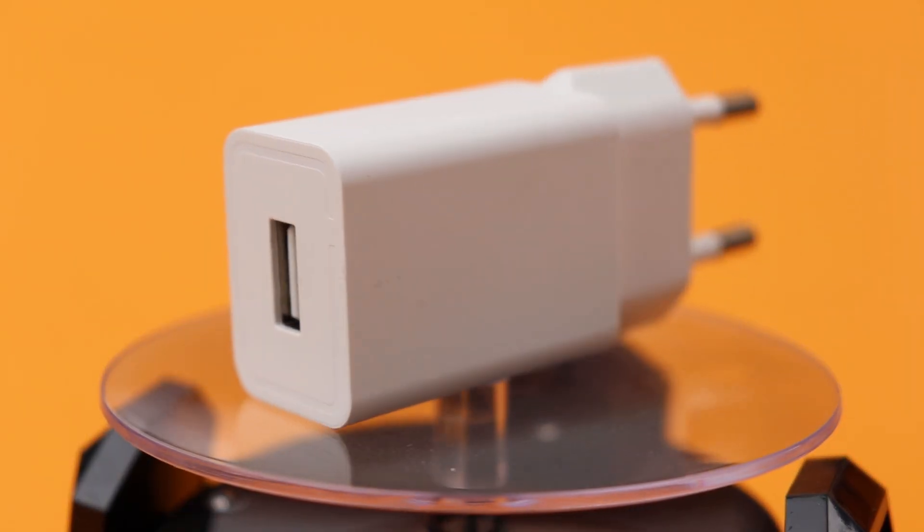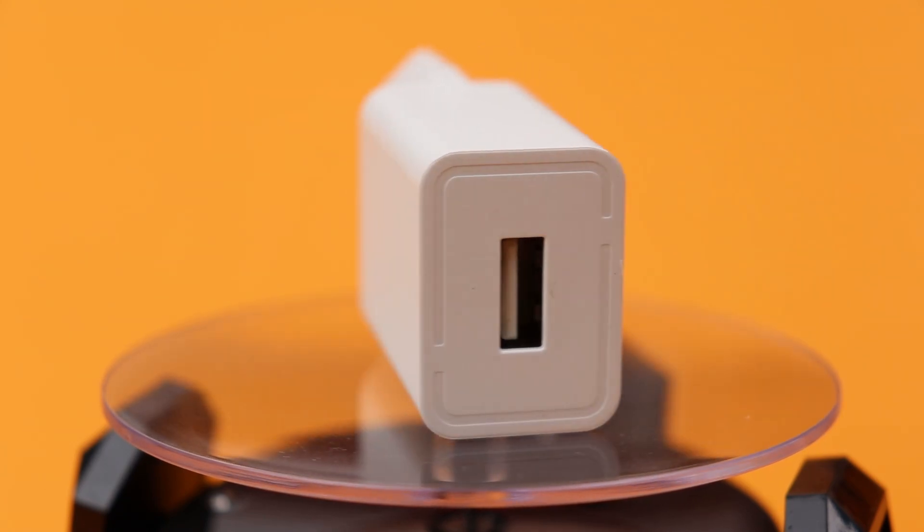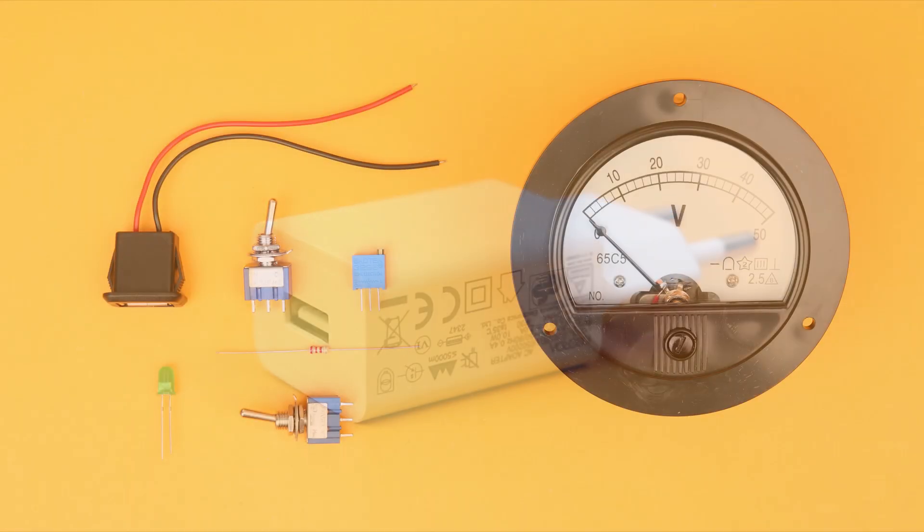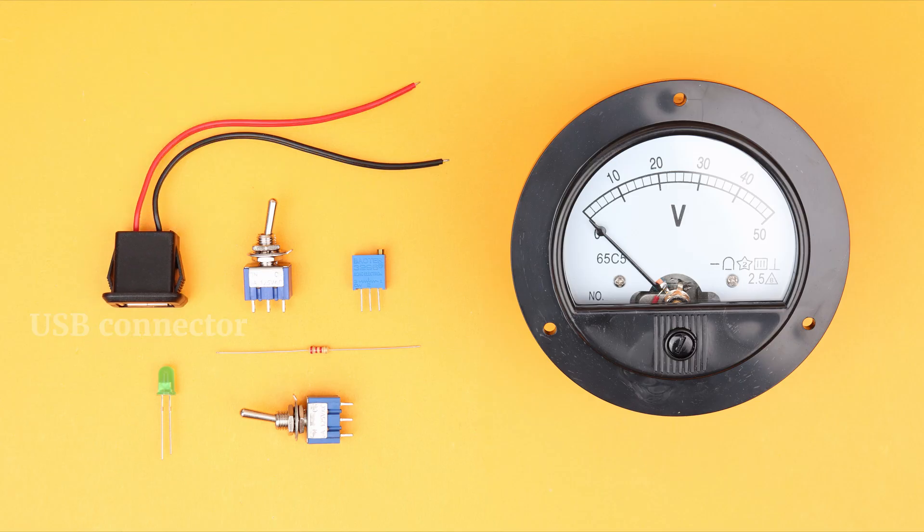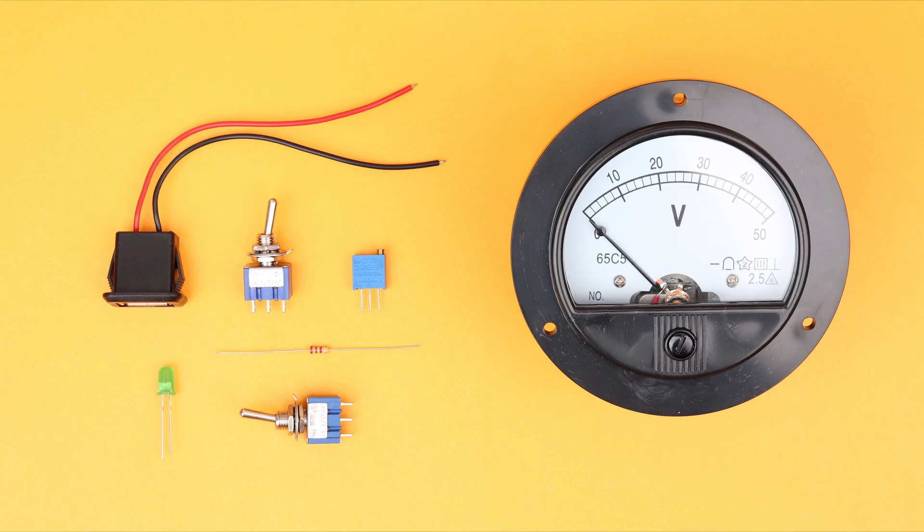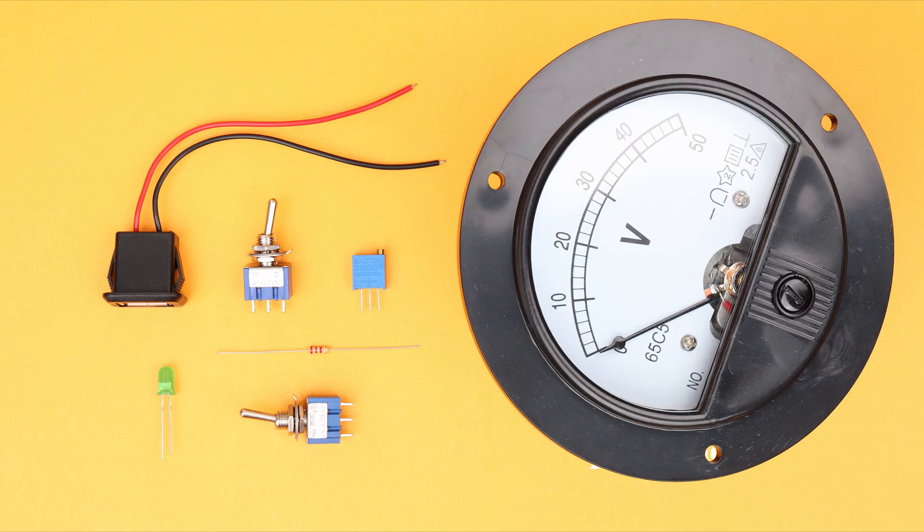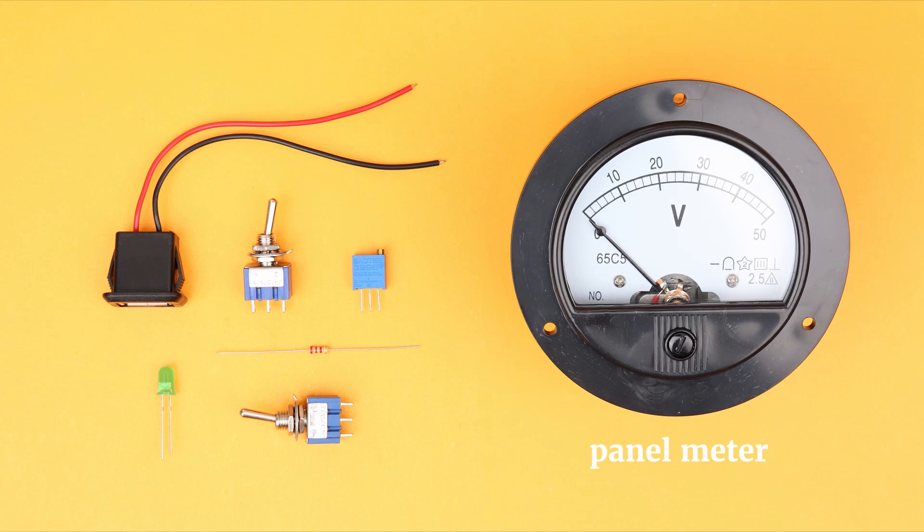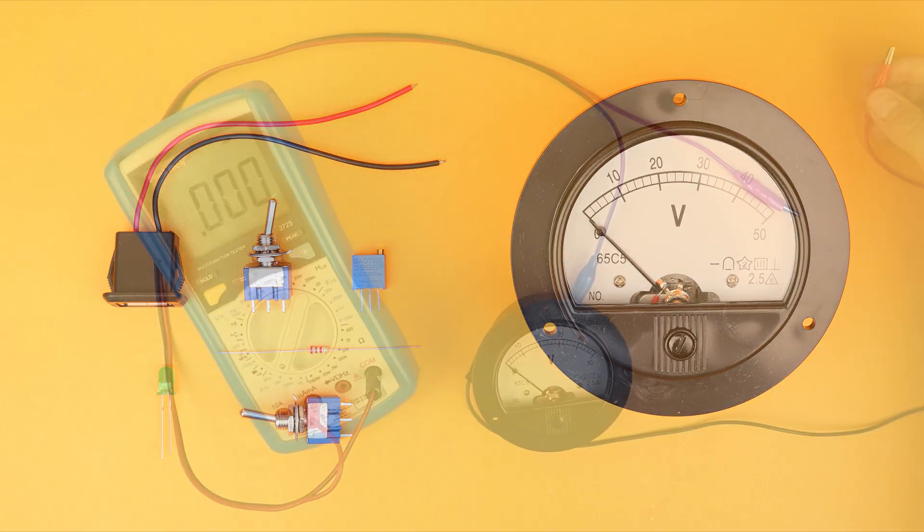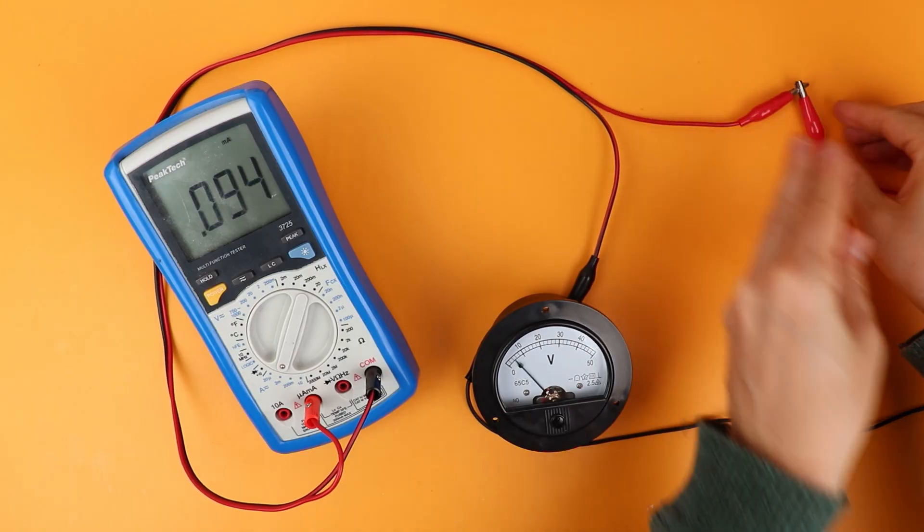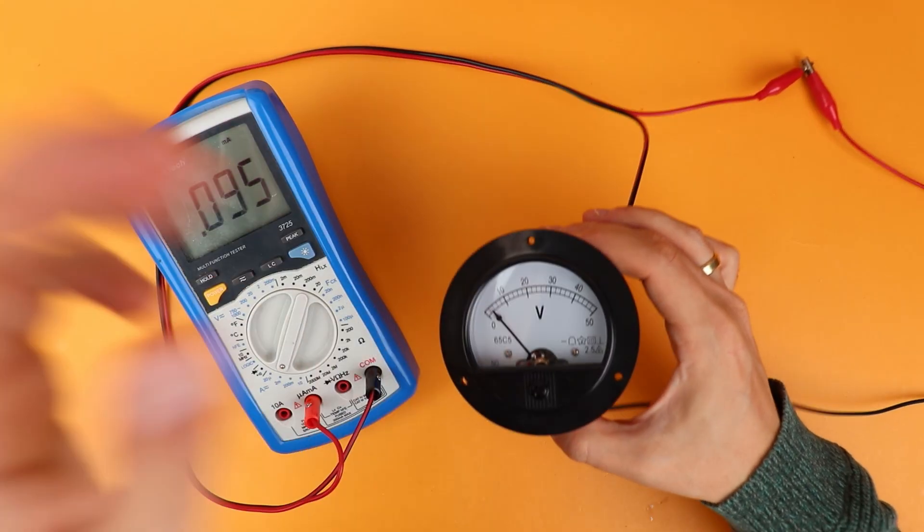And all you need is a 5V power source and I will use a normal USB power supply for this. Next we need a matching USB connector, one toggle switch that works as the on off button for our calendar and then for each day you need an extra toggle switch, a 2.2 kilohm resistor and an LED. And finally you need a panel meter. And don't worry if you cannot get this exact one here. I will show you in great detail how you can make it work with just about any panel meter that you can get your hands on.